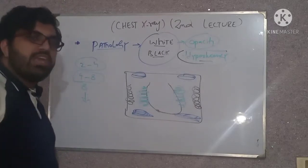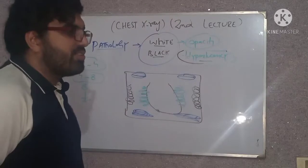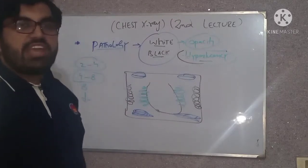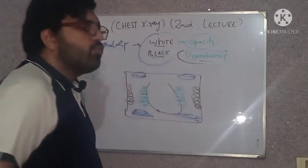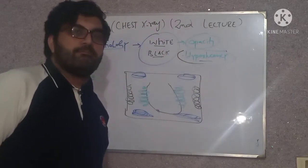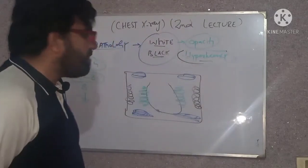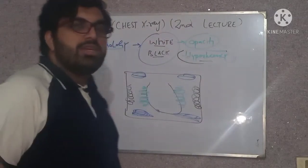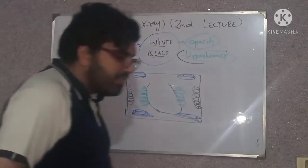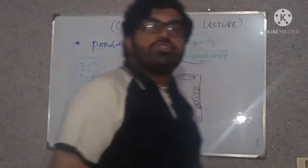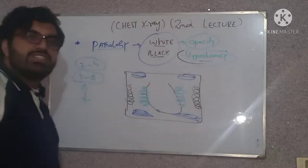A patient who is a known case of ischemic heart disease for the last four years, presenting with dyspnea, and on chest X-ray showing bilateral opacities in the lower zones with blunted CP angles — the diagnosis is bilateral pleural effusion. So the location of the lesion is very important.